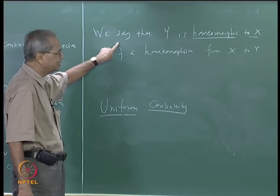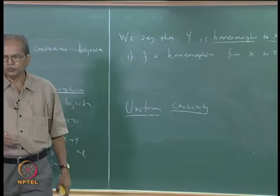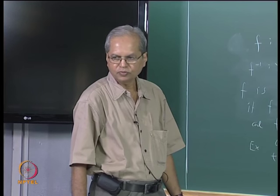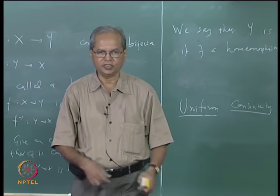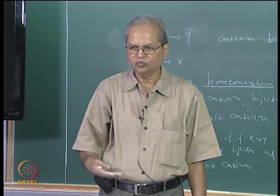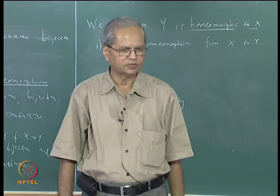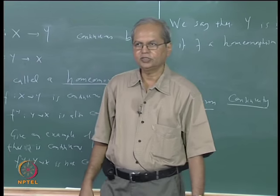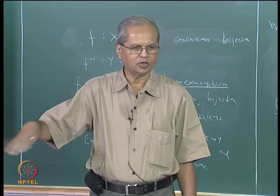Is it clear that this is an equivalence relation? x is homeomorphic to itself — the identity map is a homeomorphism. If x is homeomorphic to y, then y is homeomorphic to x, because if f is a homeomorphism from x to y, f-inverse is a homeomorphism from y to x. For transitivity: if x is homeomorphic to y and y is homeomorphic to z, then x is homeomorphic to z — take the composition of two homeomorphisms, which is continuous by the theorem proved earlier. So every metric space belongs to an equivalence class of mutually homeomorphic spaces.